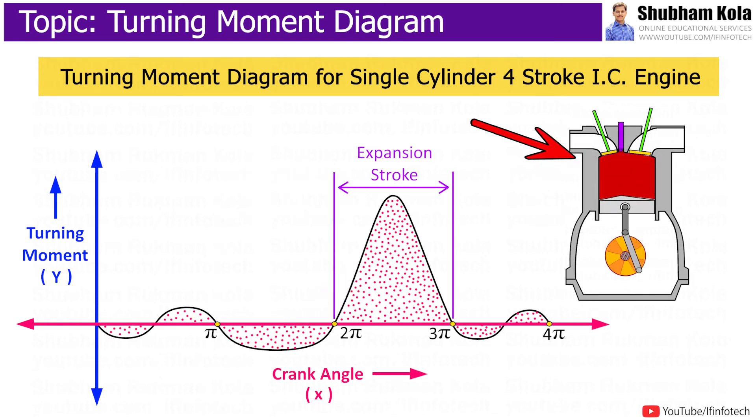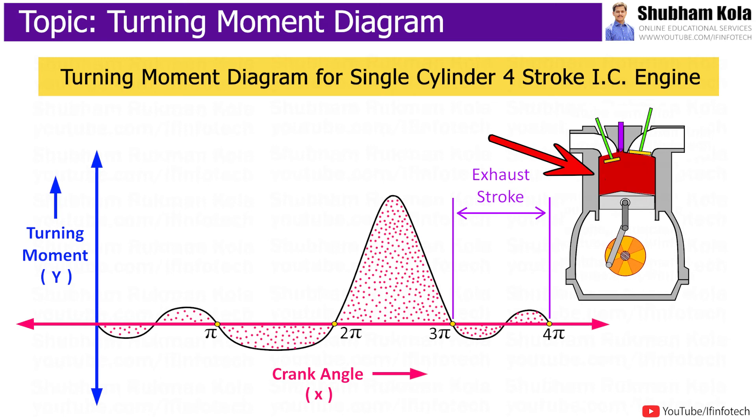During expansion stroke or working stroke, the fuel burns and gases expand, therefore large positive loop is obtained. During exhaust stroke, the work is done on gases, therefore negative loop is formed.